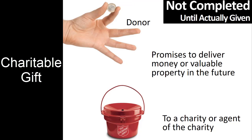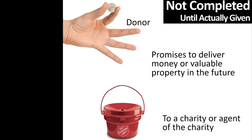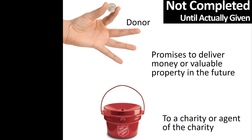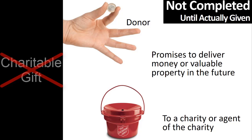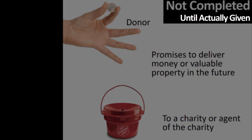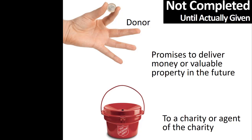The first example of an action that is not a charitable gift for income tax purposes is a promise to deliver money or valuable property in the future. A promise is not a gift. Even if the promise is a legally enforceable written contract, it is still just a promise, so it is not a gift — at least not yet. Once the promise is fulfilled and the donor actually delivers money or valuable property to the charity or agent of the charity, then, and only then, the definition for a gift is met.